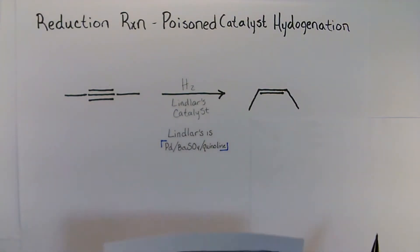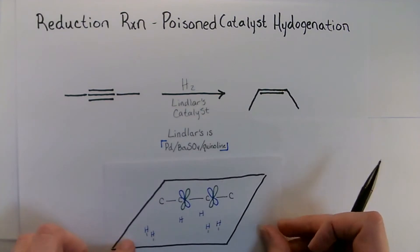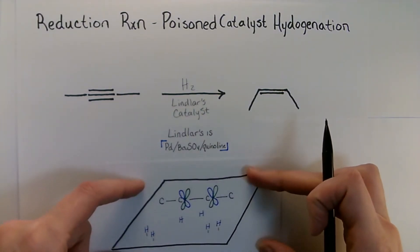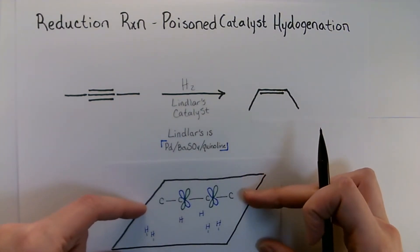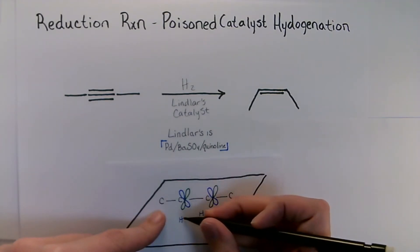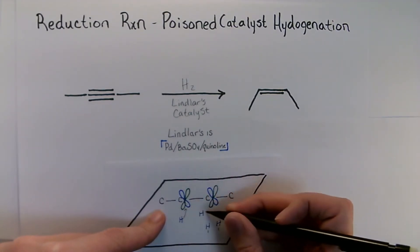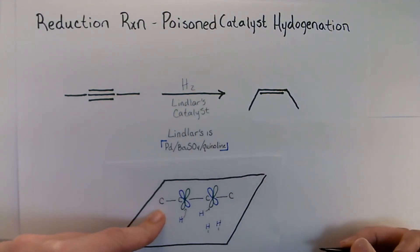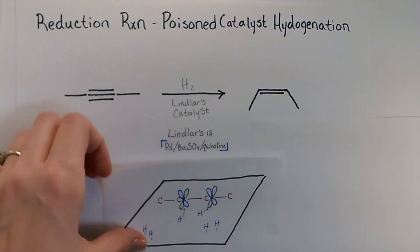With this, as the molecule absorbs to the metal, the poisoned catalyst actually prevents some of the hydrogen molecules from attaching to the molecule itself so we only get the one equivalence.